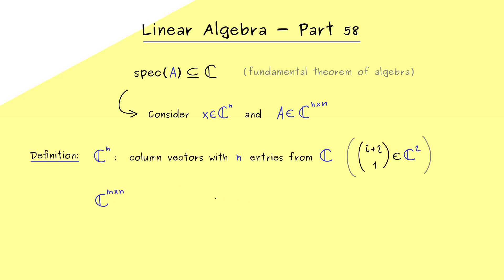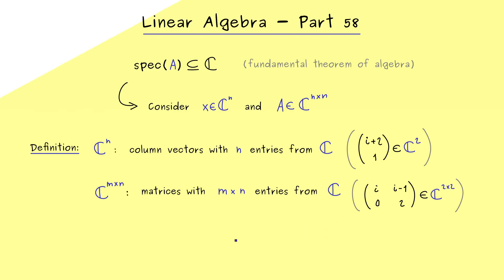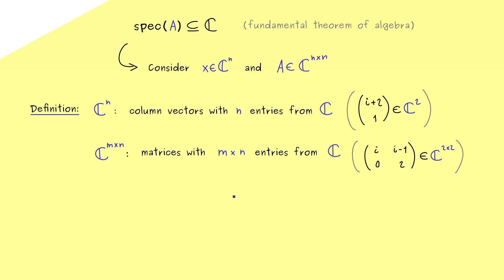And we have the same for the matrices. For an m times n matrix we write C to the power m times n. Also there we just look at an example and then you know how it works. So we could have i, 0, and i minus 1, 2. Indeed this is a well defined 2 times 2 matrix. So you see we don't have a problem defining the sets but for linear algebra it's more important that we have all the operations.